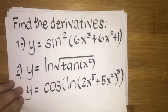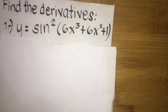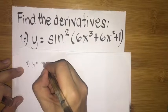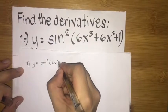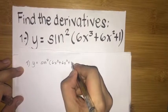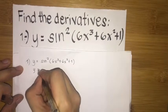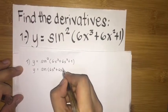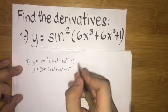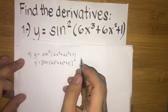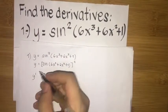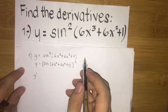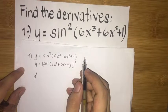Let's try our first example. Number 1: y is equal to sin squared of quantity 6x cubed plus 6x squared plus 1. I can rewrite it as sin of (6x cubed plus 6x squared plus 1), quantity raised to the power of 2 — they are just the same. Let's solve it by applying the chain rule. Notice that this is not just a single composite function; in fact, we have two composite functions here.